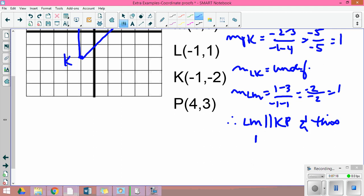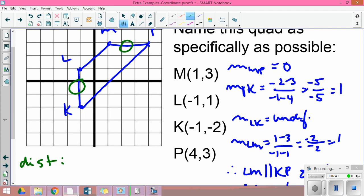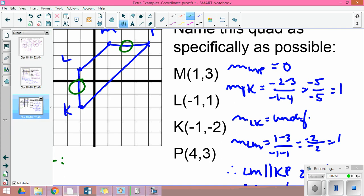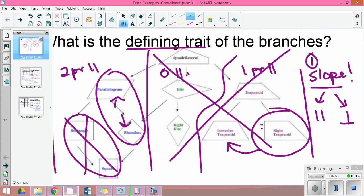This is a trapezoid, but is it an isosceles trapezoid? I know it's not a right trapezoid because I don't have perpendicular, so it's a trapezoid of some kind. Now I have to check distance, and the only distance I care about in a trapezoid is the non-parallel sides. If they're equal I have an isosceles trapezoid; if they're not, I have a regular trapezoid.